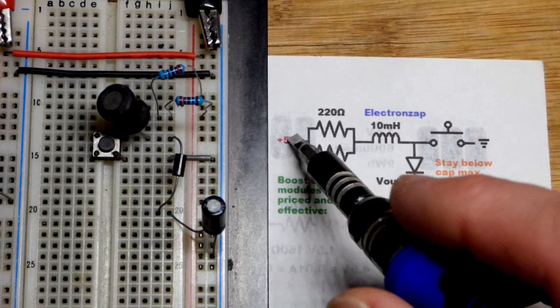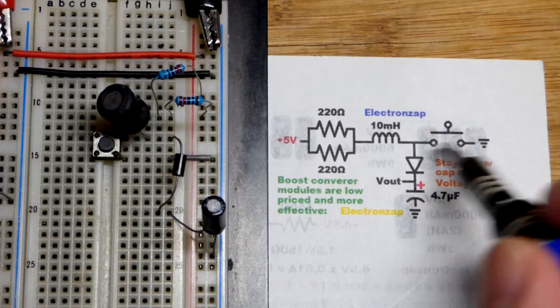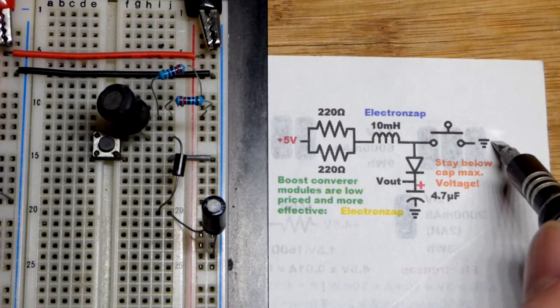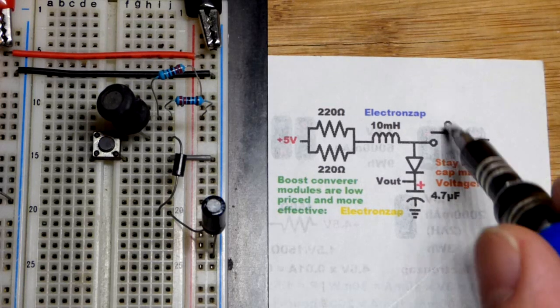Current is going to flow through the inductor based on the resistance. There's a little bit of resistance with the inductor, but current is going to flow. When we open the switch,